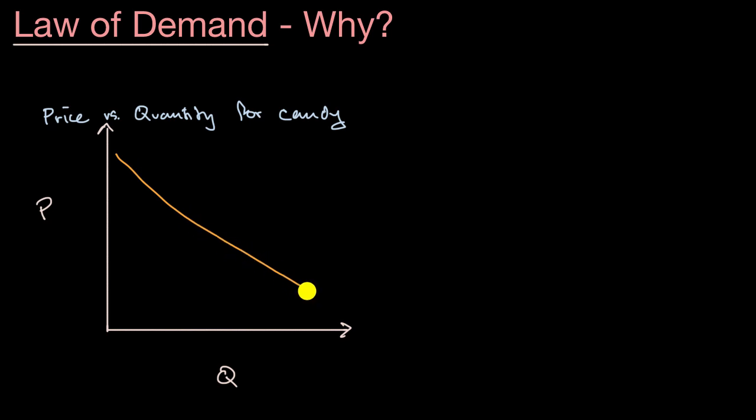What we're going to do in this video is dig a little bit deeper into why we have that downward sloping demand curve. And I know what some of y'all are saying, well, it kind of makes common sense. If the price goes down, I would want more of that, and so would everyone else. But let's dig into why you would want more of something as the price goes down.